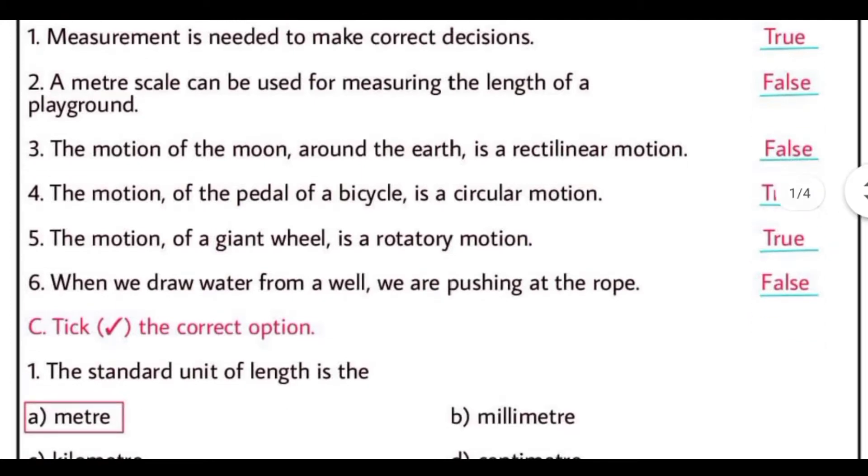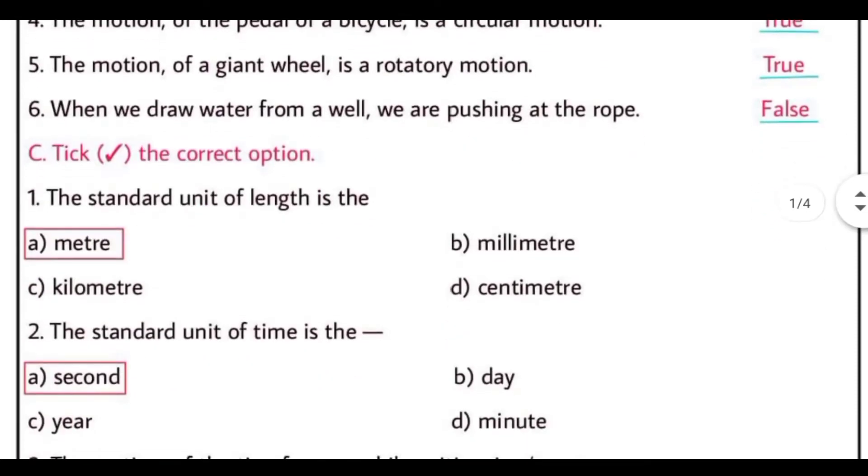The motion of the pedal of a bicycle is a circular motion. The statement is true. The motion of a giant wheel is a rotatory motion. The statement is also true. When we draw water from a well, we are pushing at a rope. The statement is false, because we are pulling the rope. Hum usey kheench rahe hote hain.